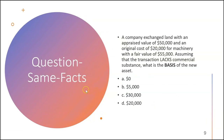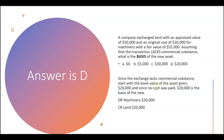Using the same facts, what's the basis of the new asset? We had a realized gain of $30,000 and zero recognized gain. Since the exchange lacks commercial substance, start with the book value of the old asset ($20,000). No cash was paid, so the basis of the new machine is $20,000. You'd debit the new machine $20,000 and credit the old land $20,000. The answer is D.